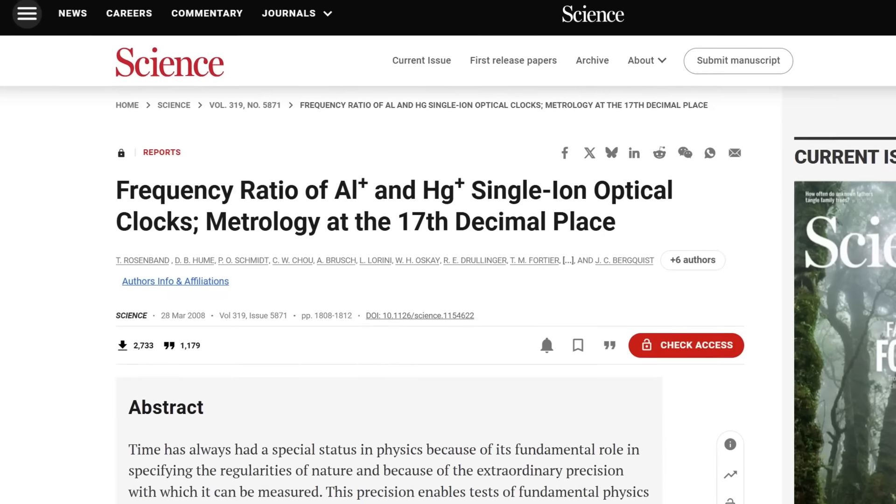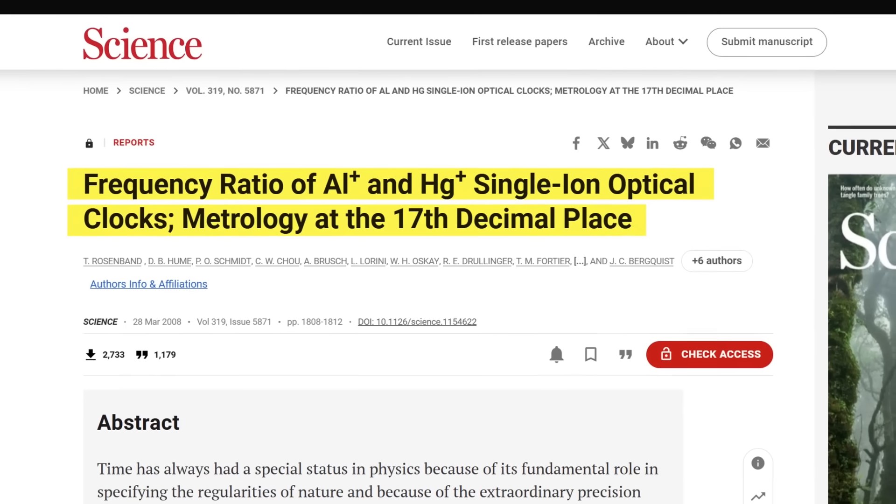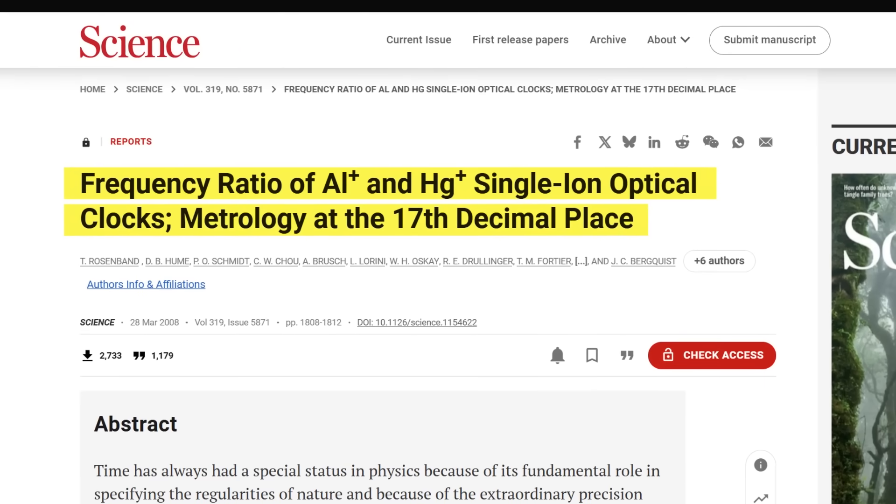Scientists have actually already tried to do this, and once again, there were problems. An experiment performed in 2018 did observe a fractional change in alpha of about one part in 100 quadrillion per year. This result means that if the value of alpha is changing, it's doing so extremely slowly. It would take 100 quadrillion years for its value to double.